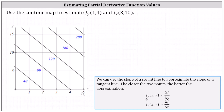To estimate the partial of f with respect to x, we select two points in the x direction and determine the change in the function value divided by the change in x. To begin estimating the partial of f with respect to y at (1, 4), we locate the point (1, 4) on the contour map and determine the function value.